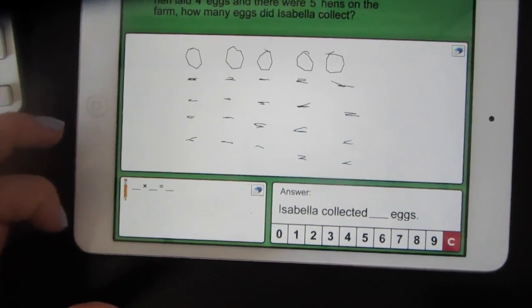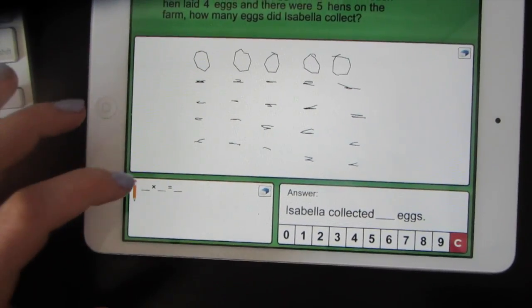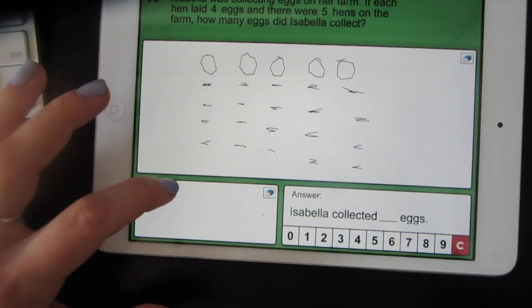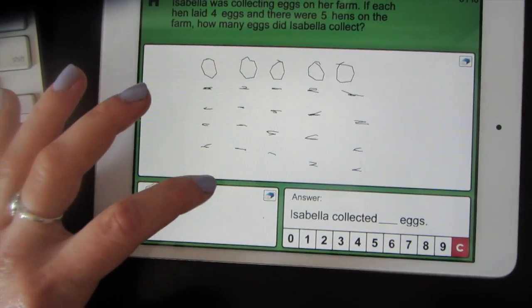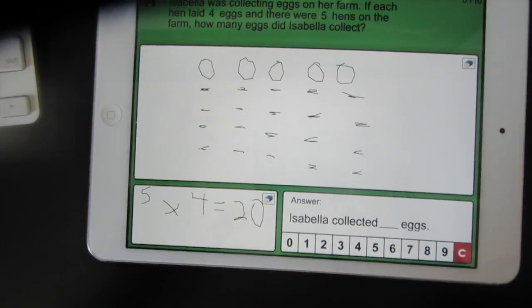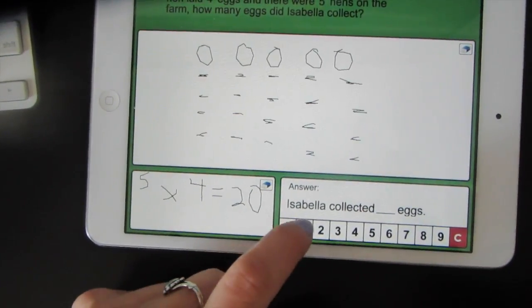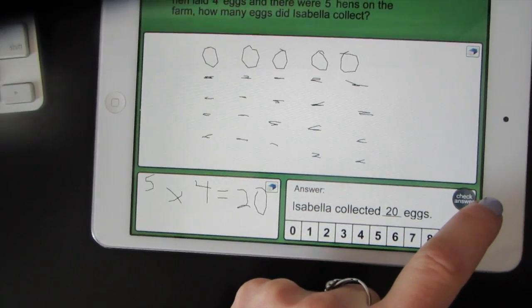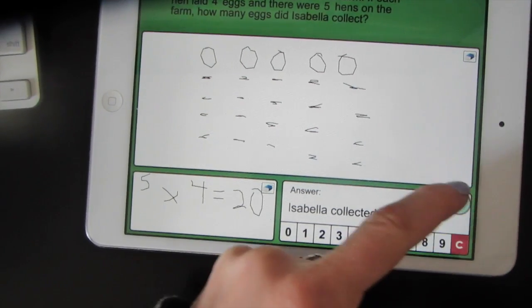Down here is where you can practice writing out the multiplication problem. Five times four equals 20. And then type your answer into the answer block. Tap check answer if you think you got it.